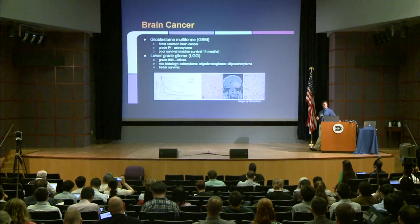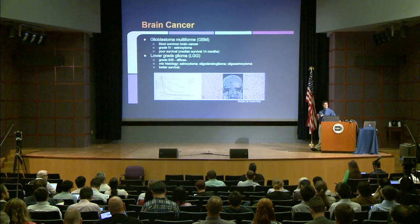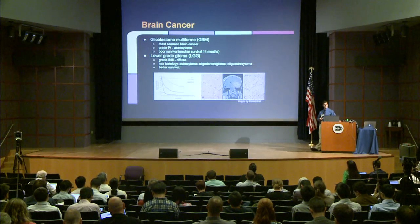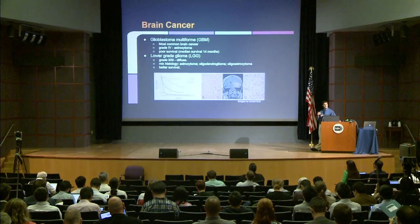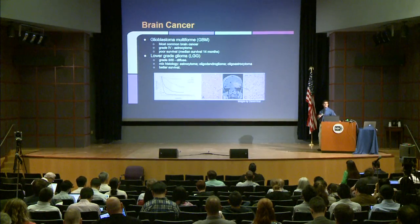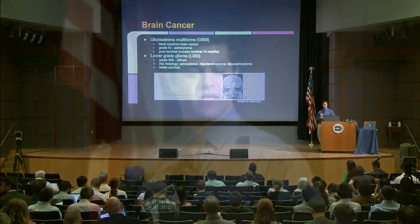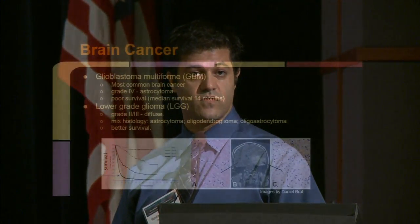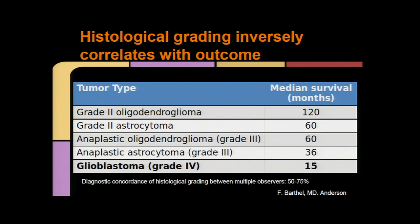Brain cancer, as we know, is divided among grades and histology, as was shown by Leila's presentation earlier today. Glioblastoma multiforme is representative of high grade — grade four — typically of astrocytoma-like cell types, and generally has poor survival. The lower grade gliomas are diffuse, generally grade two and grade three, with mixed histology: astrocytomas, oligodendrogliomas, oligoastrocytomas, with an overall better survival. We consider histological grading inversely correlates with outcome.